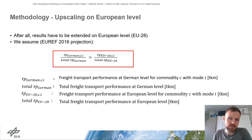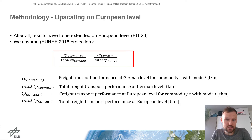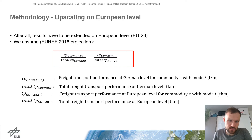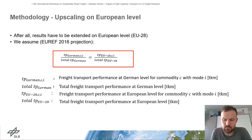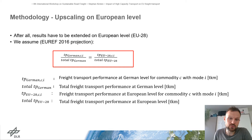In the end we got results focusing on German freight transport, and now we upscale the results to European level — extending to the EU28, including the United Kingdom. For this we used an equation stating that the ratio of transport performance in Germany is approximately similar to the transport performance in the European Union. These assumptions are not arbitrary; they are based on a 2016 projection which supports this equation.